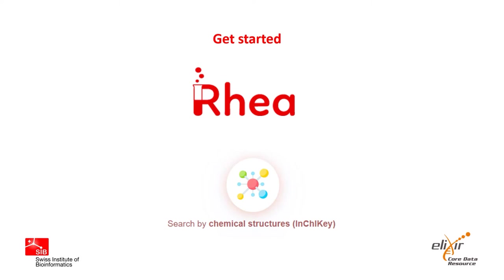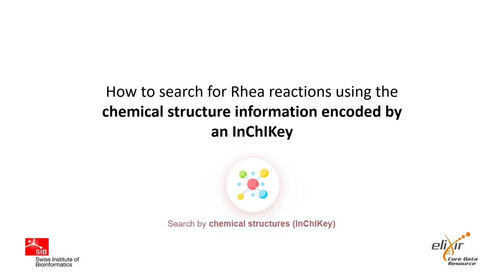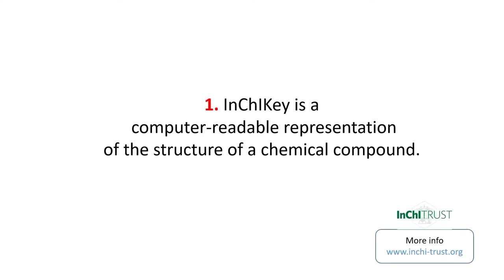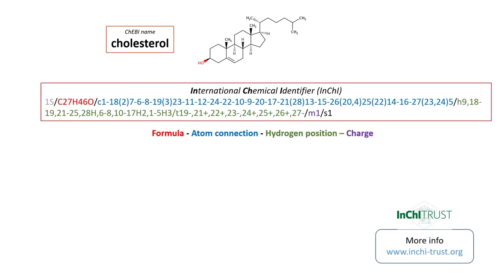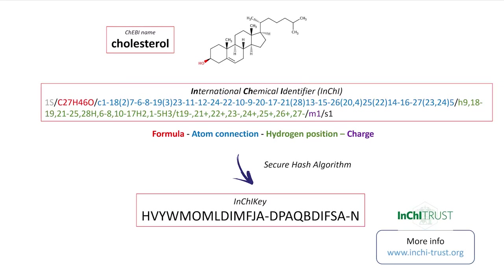Welcome to this tutorial where we will learn how to search for real reactions using the chemical structure information encoded by an INCHI key. An INCHI key is a computer-readable representation of the structure of a chemical compound. It is derived from the International Chemical Identifier or INCHI standard, a textual representation that describes a molecule in terms of different layers of information: formula, atom connection, hydrogen position and charge. The condensed INCHI key is a hashed version of the full INCHI, which is designed for easy web and database searches of chemical compounds.